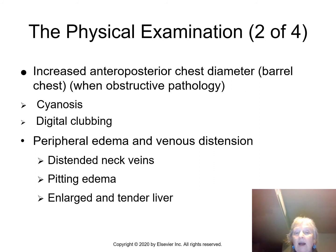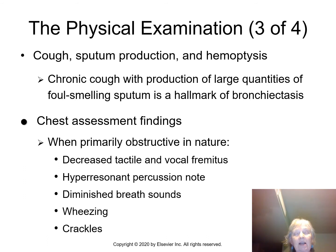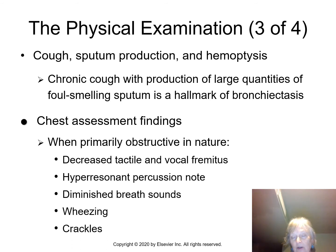You'll also see increased JVD, pitting edema — categorized by how long it takes to recover — and an enlarged, tender liver. Symptoms include cough, sputum production, and hemoptysis. Importantly, foul-smelling sputum is the hallmark of bronchiectasis — if you encounter that odor and it's not an abscess, you're looking at bronchiectasis. Obstructive findings include decreased tactile vocal fremitus, hyperresonance, diminished breath sounds, wheezes, and crackles.